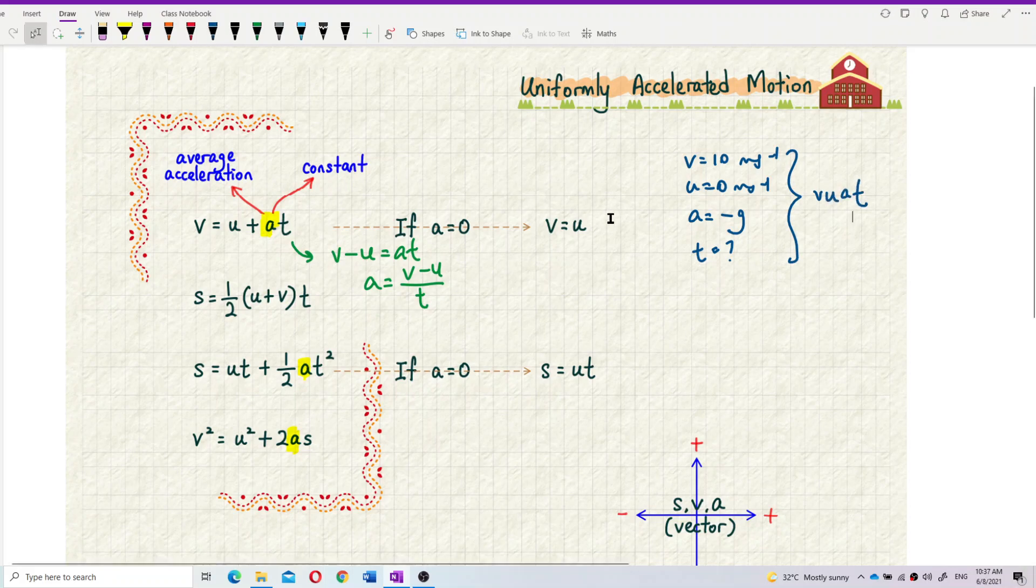So you want to find, it gives you three known values, find the one unknown. Just use this formula, then you can find the time taken. So it always gives you three knowns and one unknown.